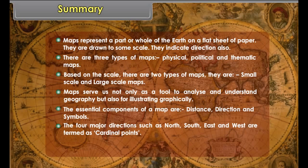Summary. Maps represent a part or whole of the earth on a flat sheet of paper. They are drawn to some scale. They indicate direction also. There are three types of maps: Physical, political, and thematic maps.